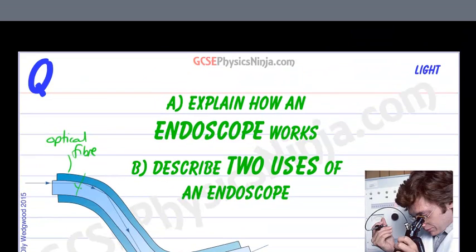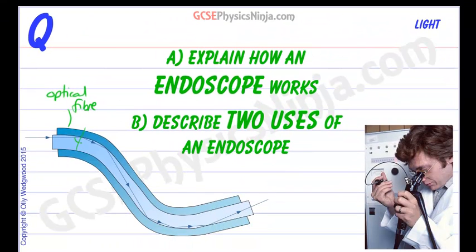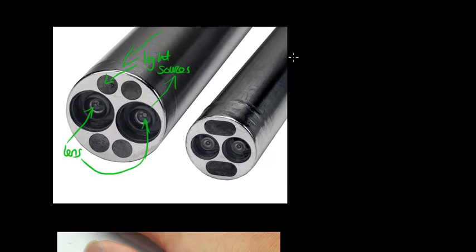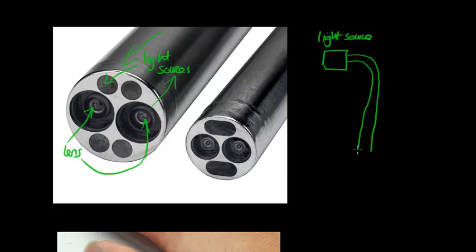Okay, let's write a few things to answer this flashcard. First of all, a picture is worth a thousand words, so let's do a simple picture here. We're going to have a light source that shines light down this bundle of optical fibers onto the area under investigation, and here we have a lens which will have another bundle of optical fibers that sends the image back to a camera.